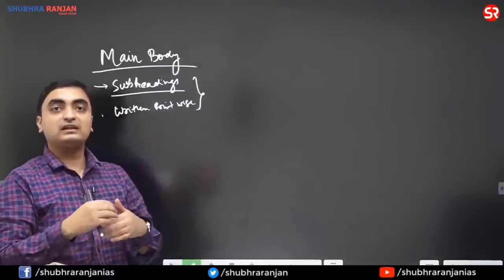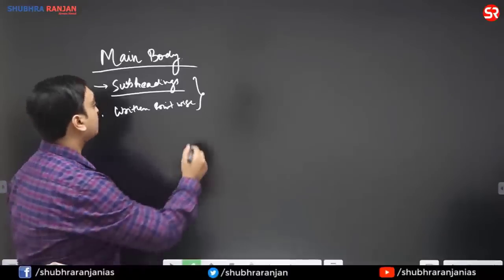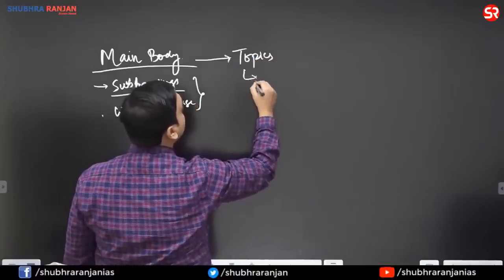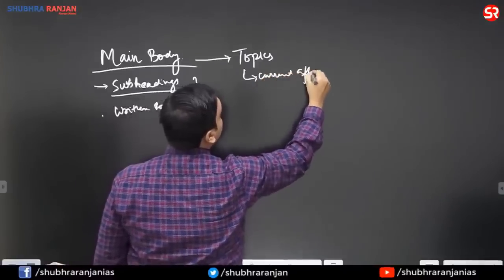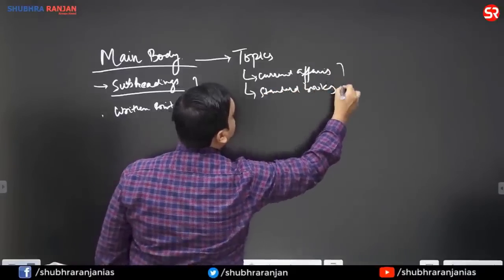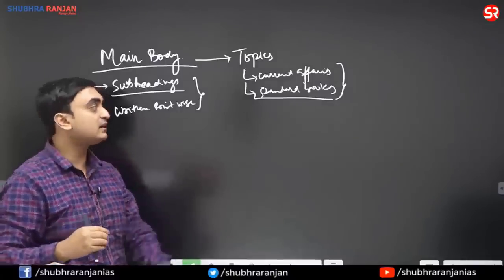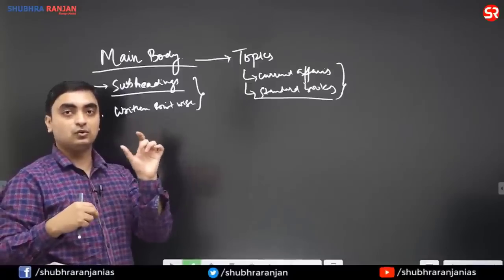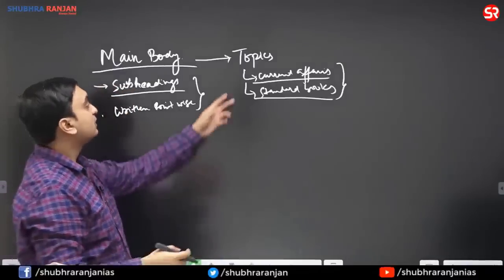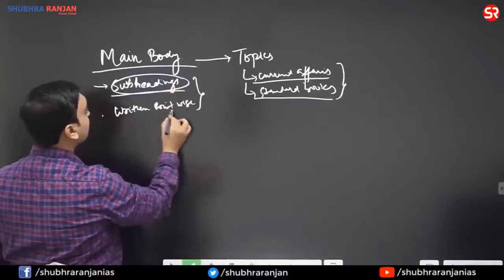The main body definitely has to be written according to the need of the question, so you cannot prepare that beforehand. Main body content in GS papers comes from current affairs or standard books — either whatever is covered in the standard books, or for things not covered in standard books, you can use your subtopic notes prepared for introduction and conclusion. For the main body you can use current affairs material. These are the two sources from where it comes, and you have to read both to write good sub-headings and points in your main body.